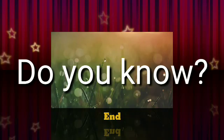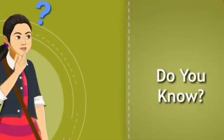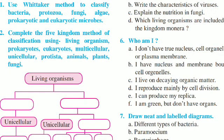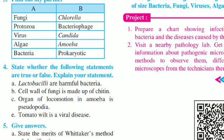Do you know, students? Polio virus, influenza virus, HIV, AIDS virus, etc. are seen in humans. Picorna virus is seen in cattle. Tomato wild virus and tobacco mosaic virus are seen in plants. Bacteriophage, that is, viruses that attack bacteria, are seen in bacteria. Students, here we have finished this lesson. You have to write difficult words 5 times, definitions 3 times, and solve the exercise.